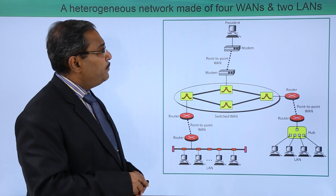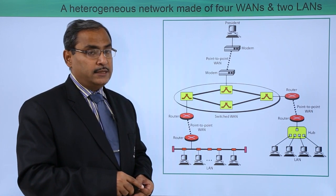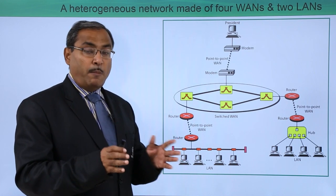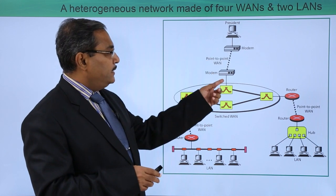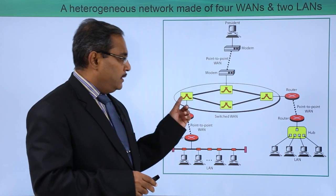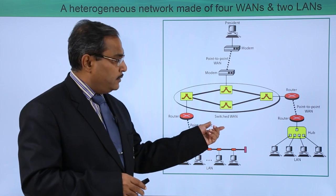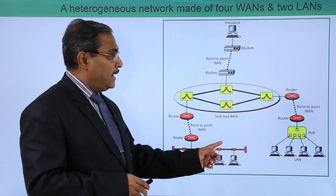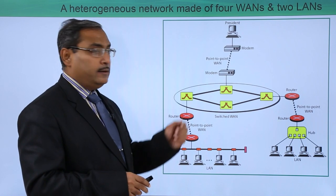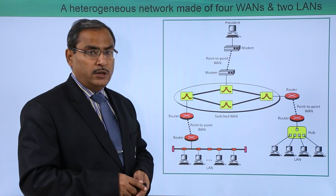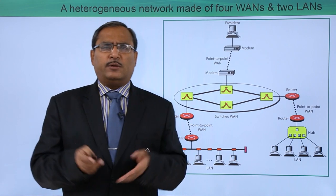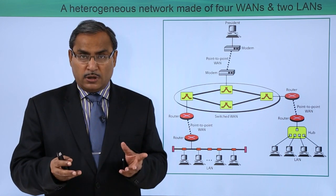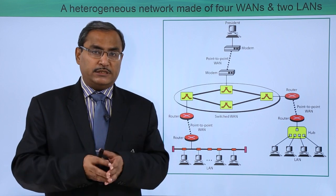Here we see a network made of 4 WANs and 2 LANs — we are considering connections between networks, not just computers. There is a point-to-point WAN and a switched WAN, with two LANs and one WAN all connected to the switched WAN. In this way, in computer communication, we can connect computers, connect devices, form a network, and also establish connections between networks.